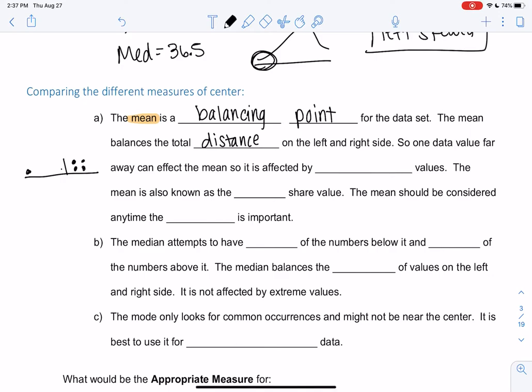So that's why if one is far away, the mean might get dragged a little bit because there's more distance on this side. The main thing we want to take away from this is that a data value far away can affect the mean. So it is affected by extreme values.